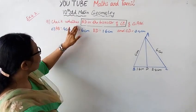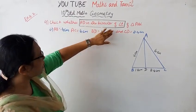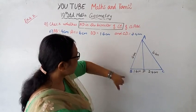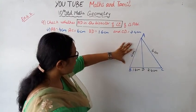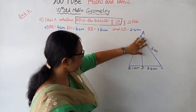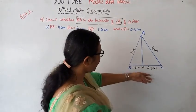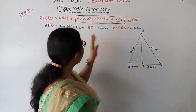Check whether AD is the bisector of angle A of triangle ABC. The given values are: AB value, AC value, BD value, and DC value.